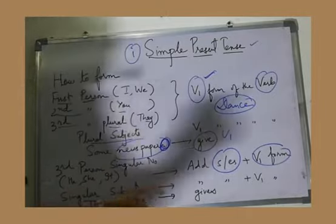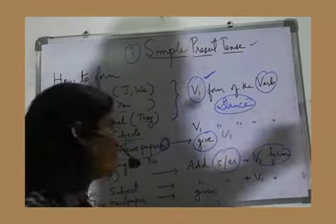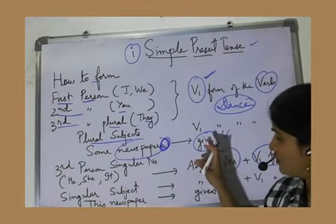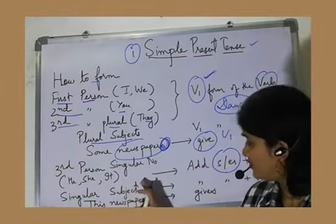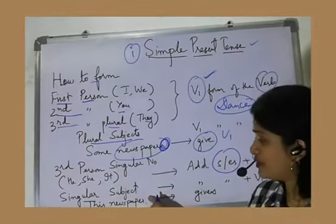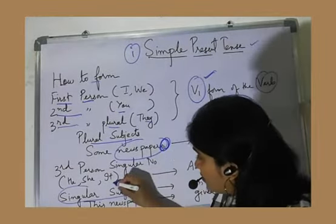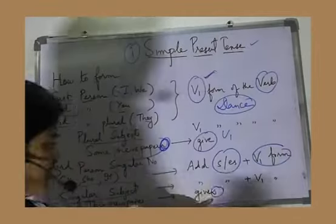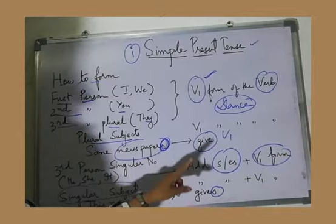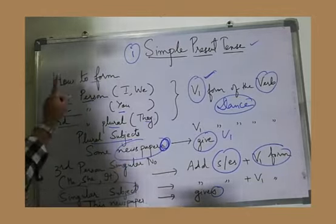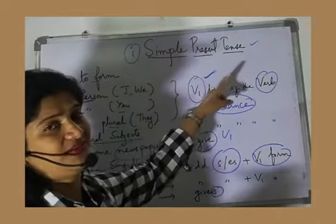So with singular subjects also, we have to add S or ES. Like here, I give example: some newspapers give. If it is singular subject, like this newspaper, see, S is missing over here. That means this is singular subject. This newspaper, then we have to add S over here. This newspaper gives. So this is how we form simple present tense.